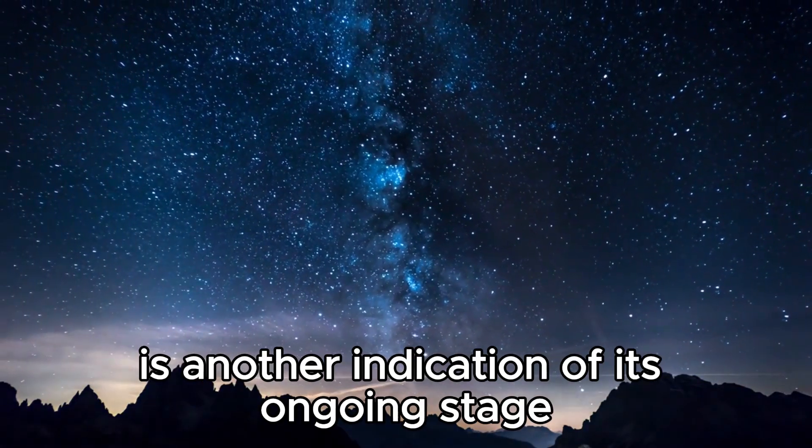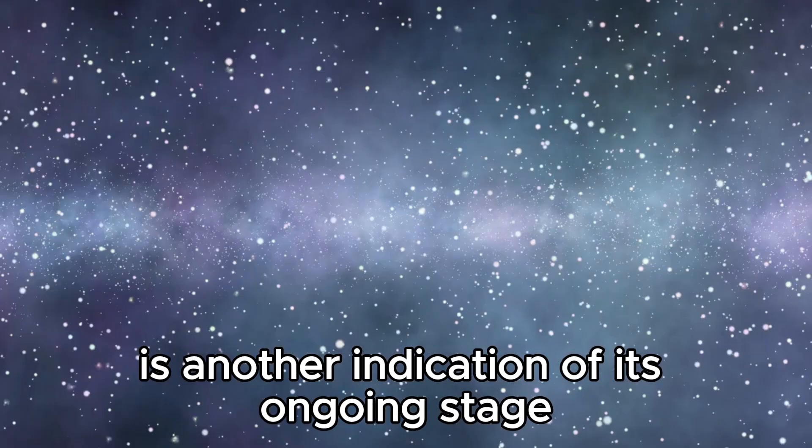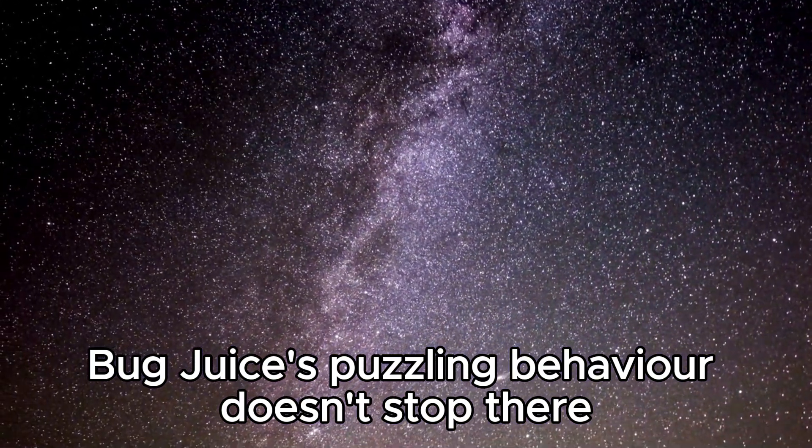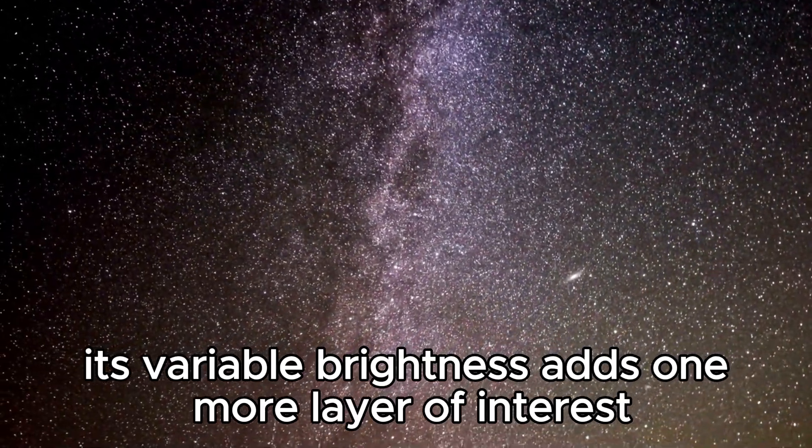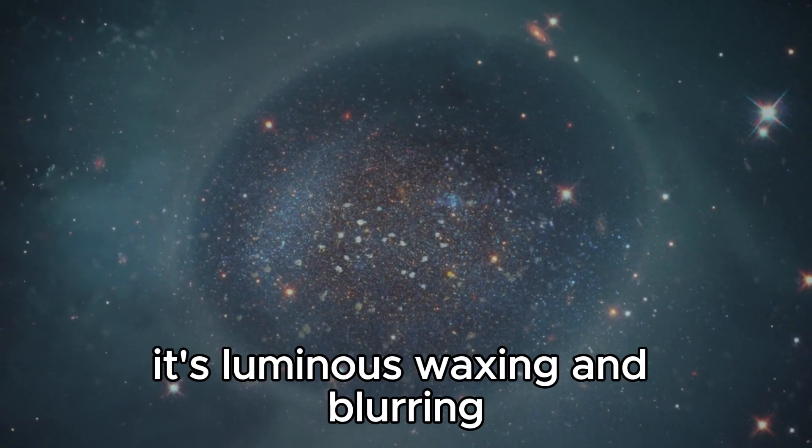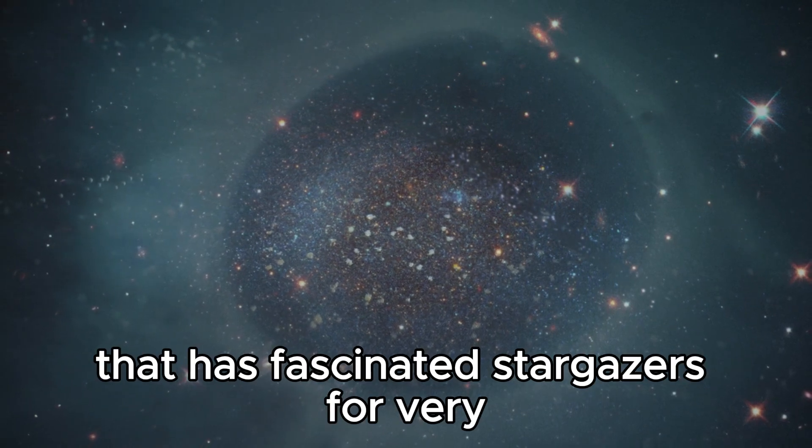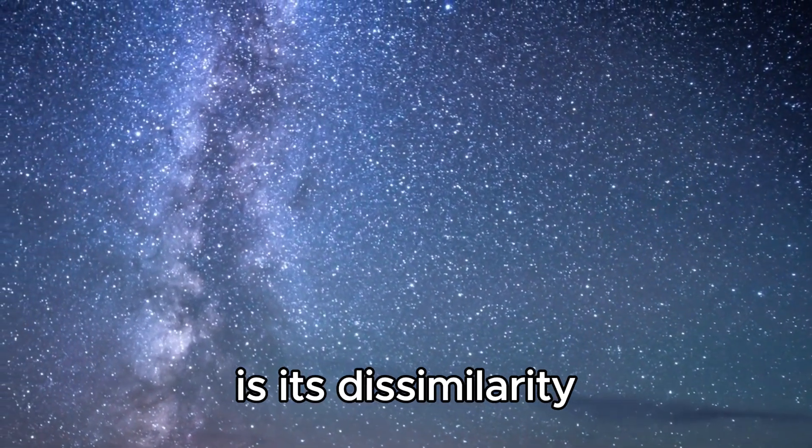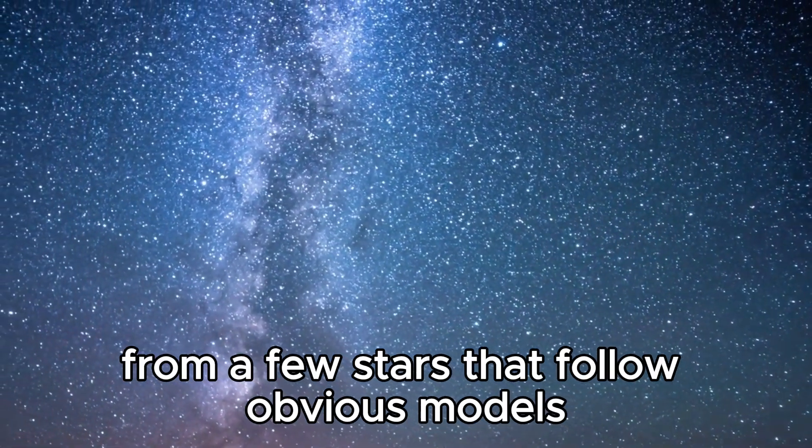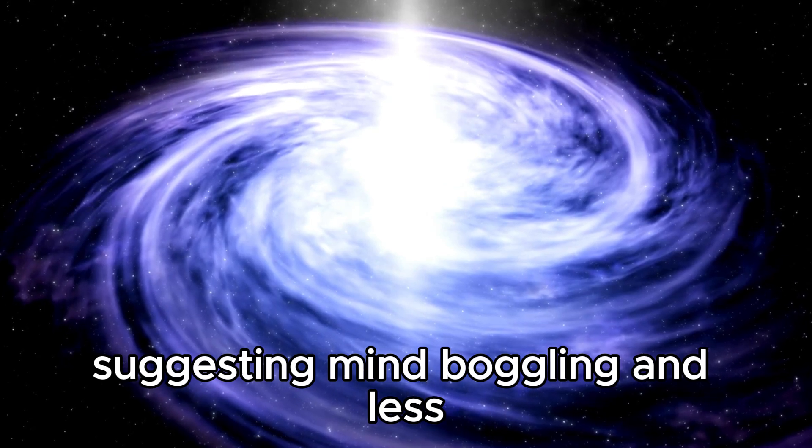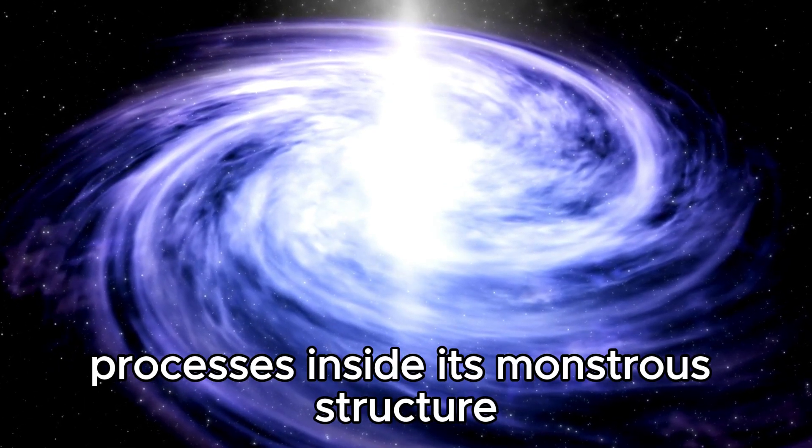Betelgeuse's distinct red color is another indication of its current stage, a result of its relatively cooler surface temperature compared to stars like our sun. However, Betelgeuse's puzzling behavior doesn't stop there. Its variable brightness adds another layer of intrigue. Betelgeuse is a semi-regular variable star, its luminosity waxing and fading in a characteristic dance that has fascinated astronomers for many years. What really sets Betelgeuse apart is its dissimilarity from stars that follow obvious patterns.